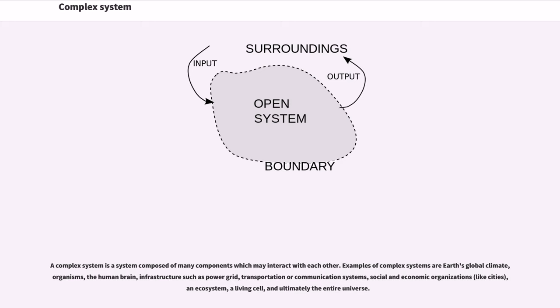Complex System: A complex system is a system composed of many components which may interact with each other. Examples of complex systems are Earth's global climate, organisms, the human brain,